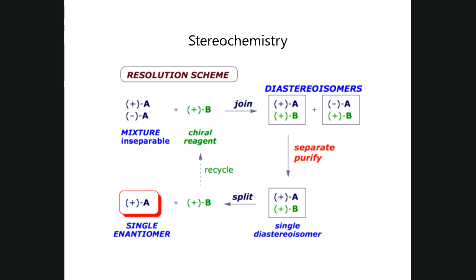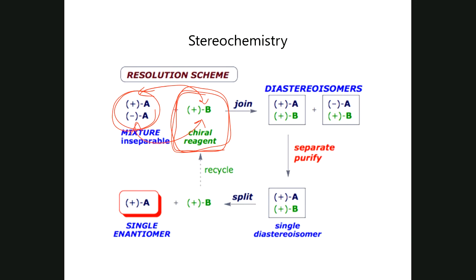What you do is mix the mixture with a chiral reagent — a pure enantiomer of another substance, only the dextro or only the levorotatory of that second substance. When it mixes with the mixture, you'll have the dextro A associating with the dextro B, and the levo A associating with the same dextro B. This produces a mixture of plus-plus AB and minus-plus AB — a mixture of diastereomers, because they differ in one but not both stereocenters. Once you've created diastereomers, they can be separated much more easily because they have differences in chemical and physical properties.